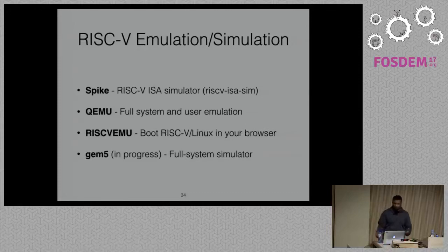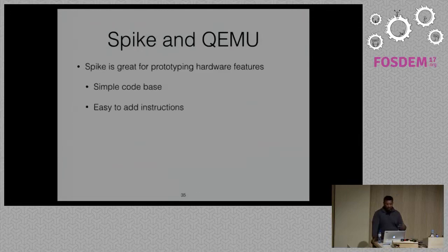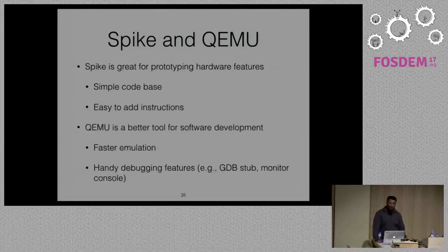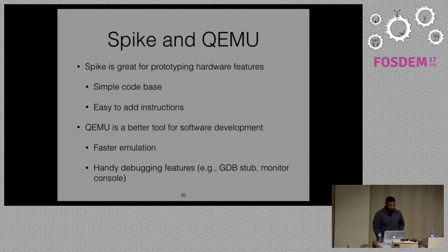A quick note on Spike and QEMU: Spike is great for prototyping hardware features — it has a really small and simple code base, making it easy to add instructions and customize the ISA. But if you're doing software work, QEMU is probably a better option: the emulation is faster, it has handy debugging features and better device support. There are a few rough edges in QEMU RISC-V now, especially with device support, but we hope to iron them out soon.